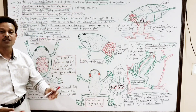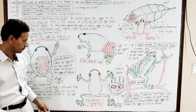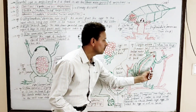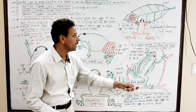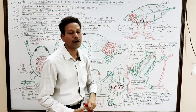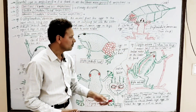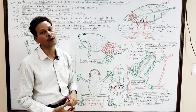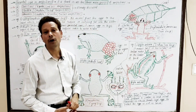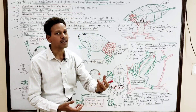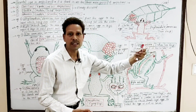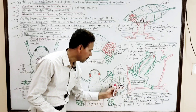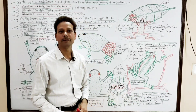The next example is Hyla arborea, again a tree frog, which is the Indian tree frog. Hyla arborea makes a nest or enclosure in shallow water near the border of a pond. The eggs are placed in these special nests or enclosures, and after hatching the larvae directly enter the water.